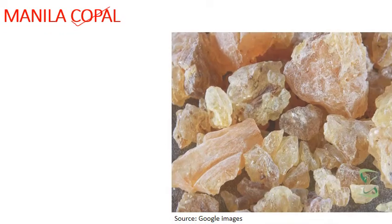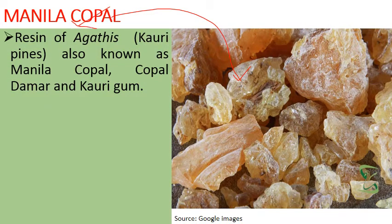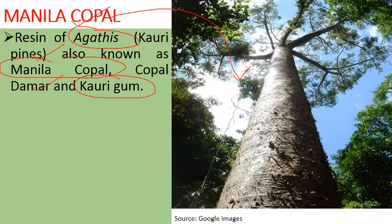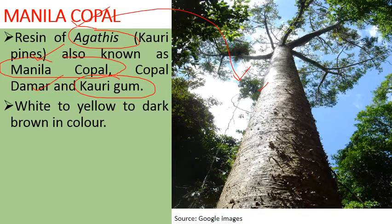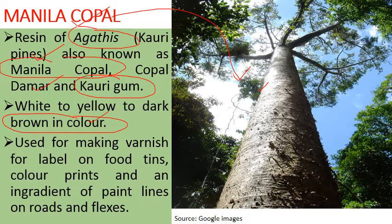Next is Manila copal, which is a solid resin obtained from Agathis, commonly known as quarry pine. It is also known as copal, damar, and quarry gum. It is white to yellow to dark brown in color and is used for making varnishes for labels on food tins, color prints, as an ingredient of paint, road markings, and flexes.